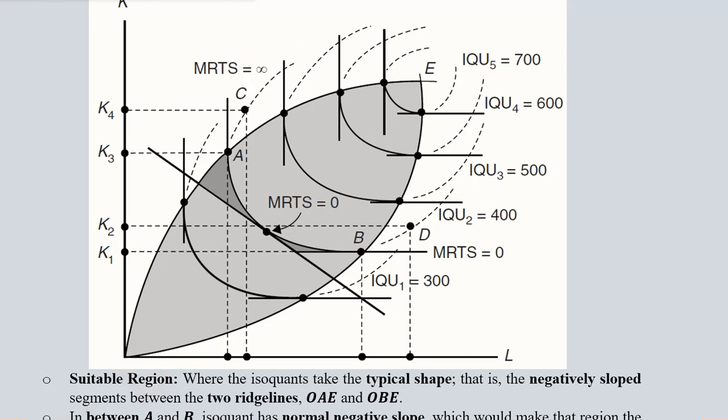MRTS is equal to infinity and the denominator is equal to zero. And here we have the point B where MRTS is equal to zero, because the denominator, that is k, is equal to k1, and the rate of change if it is equal to zero it means that MRTS is equal to zero.